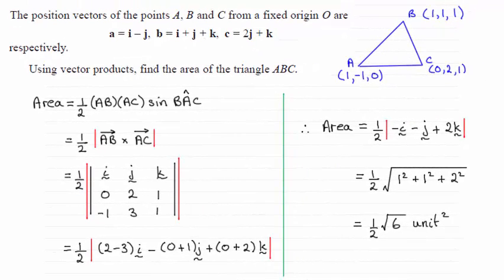Hi there. So for this question we were asked to find out the area of the triangle ABC where the vertices A, B and C were given by these position vectors respectively and we had to use vector products.